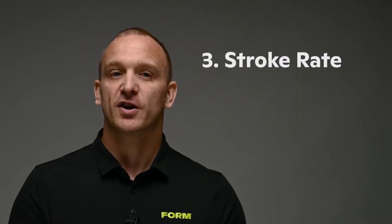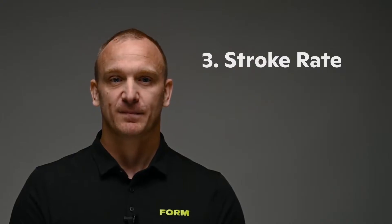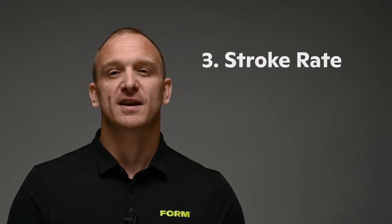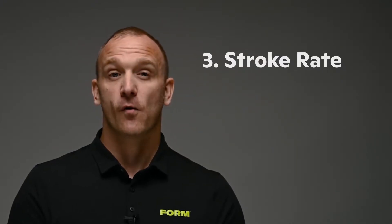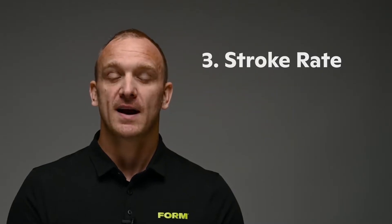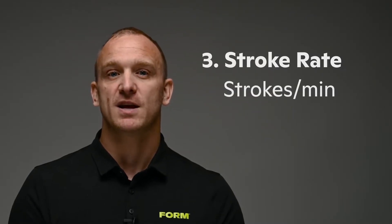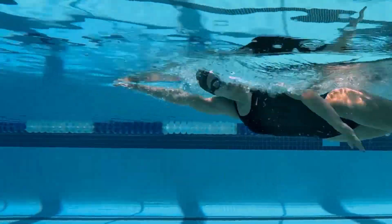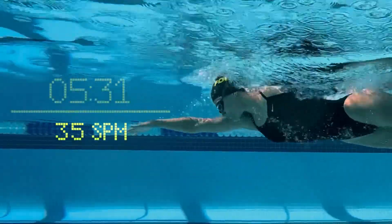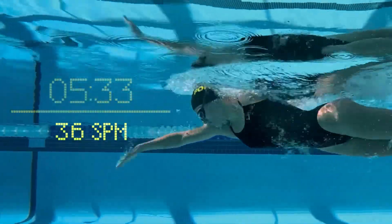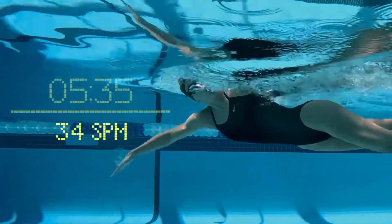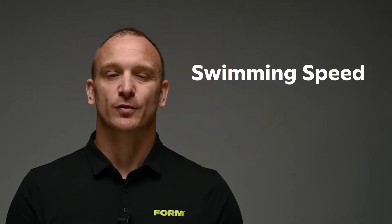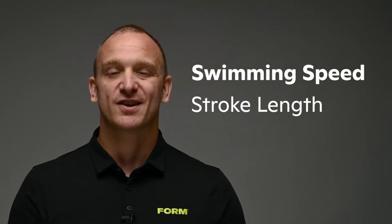Next is your stroke rate, which is similar to your cadence in cycling. Stroke rate can be measured in several ways. With Form, we measure your stroke rate as the number of strokes per minute you're taking. With your Form goggles, this can be measured and shown to you in real time to give you live feedback about your stroke rate. Put most simply, your swimming speed is a result of your stroke length and your stroke rate.